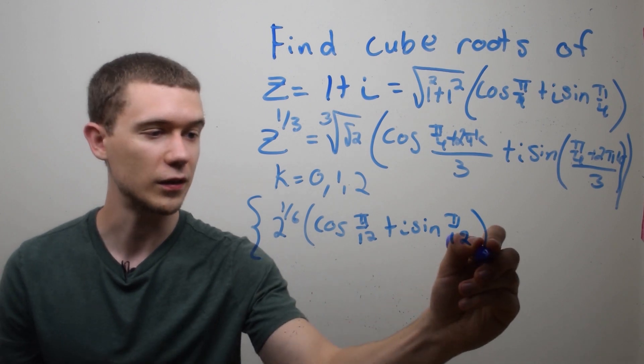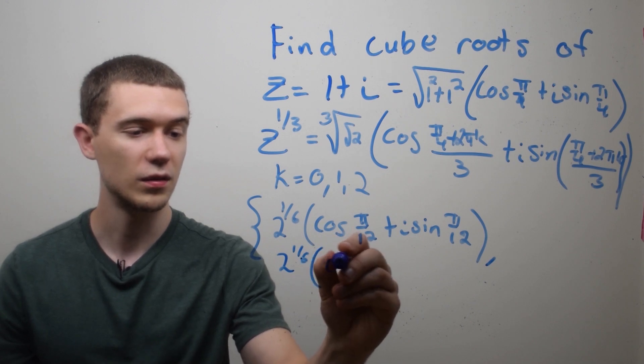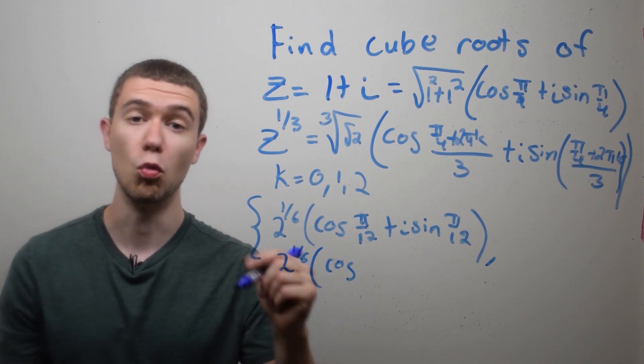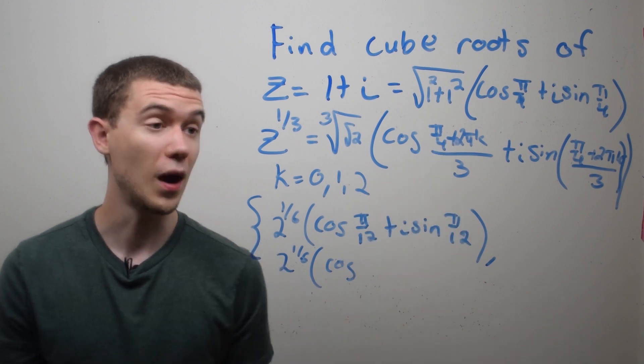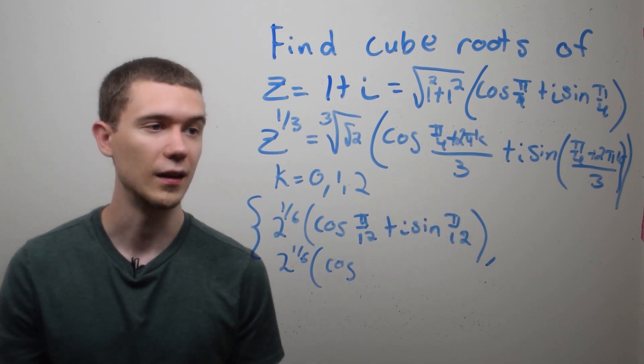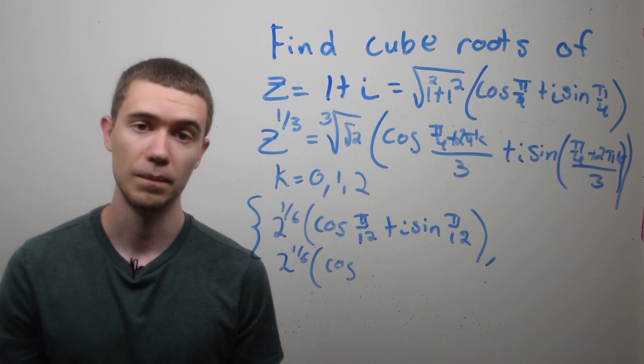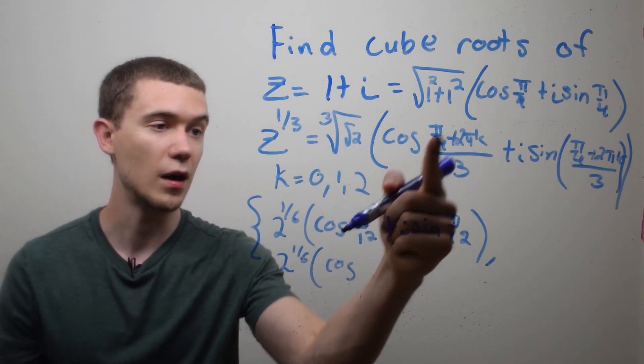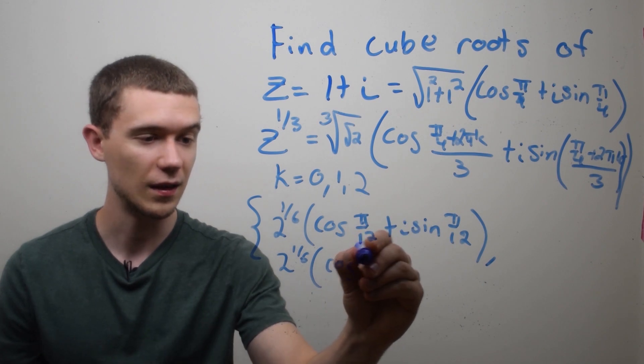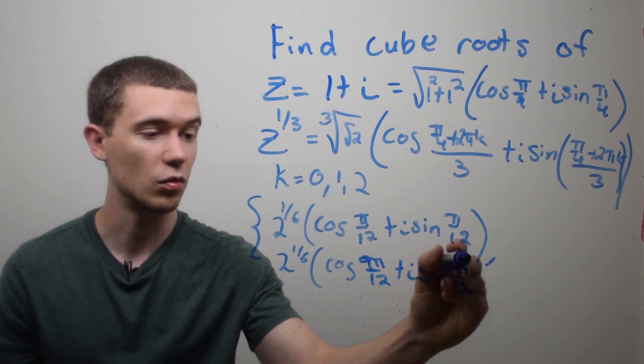And we should get three of these, right, if it's a cube root. The next one will be 2 to the sixth times cosine of, and this time I have to plug in 1 for k. So that would be pi over 4 plus 2 pi all over 3. And let's see, 2 pi, that's the same as 8 pi over 4. 8 plus 1 is 9 pi over 4 divided by 3 is 9 pi over 12, plus i sine of the same thing, 9 pi over 12.